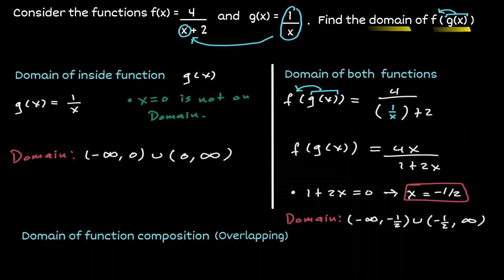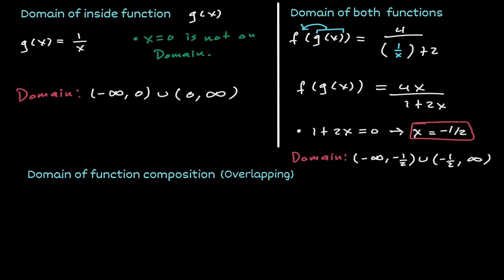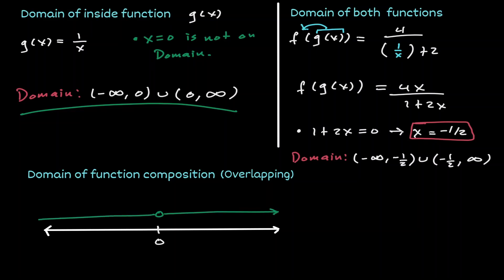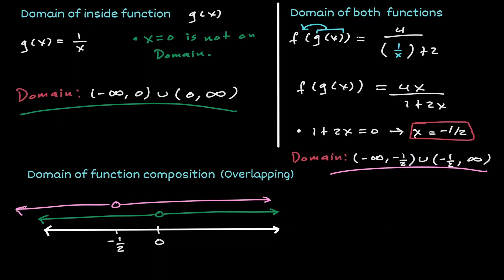Now that we have the domain of the inside function and the domain of the composition, let's see where both overlap. Let's draw a number line and place the domain of the inside function — all values except 0. On the same number line, let's place the domain of the composition — all x values except negative 1/2. Moving from left to right, they overlap everywhere until we reach negative 1/2, where they do not overlap.